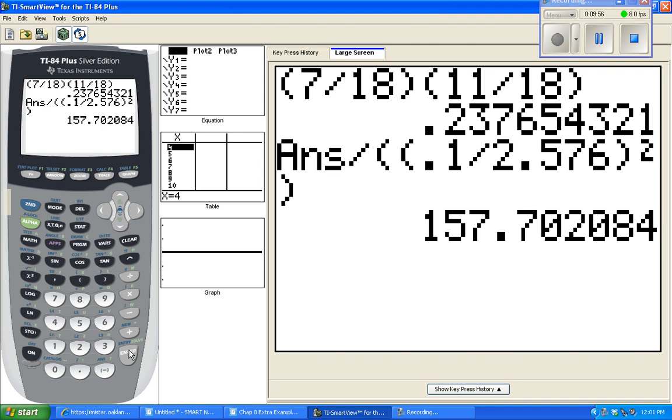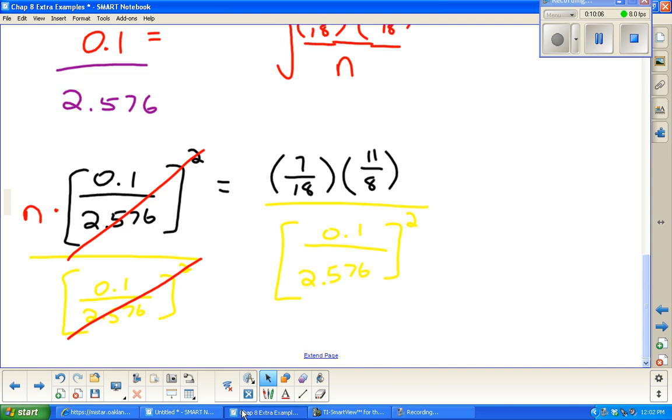That is going to get us N. We got ourselves a nice little calculator problem. So 7 18ths times 11 18ths. Let's take the answer that we have, divide by 0.1 over 2.576 squared, and that's giving us an answer of about 157.7. N would need to be 157.7. We're not going to probably sample 0.7 of a roll of toilet paper, so we're going to round up. N needs to be at least 158 rolls of toilet paper. Always answer in context.